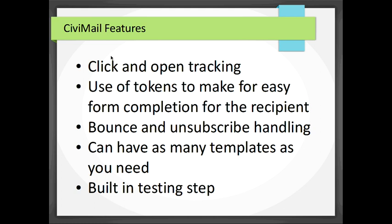CiviMail is the bulk mailing system within CiviCRM. It does click and open tracking and uses tokens — like merge fields — so that when someone clicks from an email to a donation page or event registration page, their information is pre-filled without requiring them to log in. It handles bounces and unsubscribes automatically. You can create templates — there's no easy drag-and-drop wizard, but if you have someone who knows HTML and CSS you can do a lot with it. There's also built-in testing with a test group.